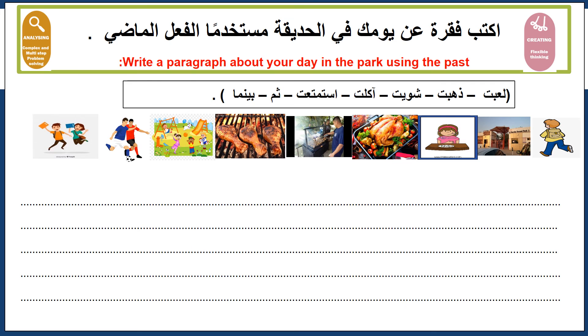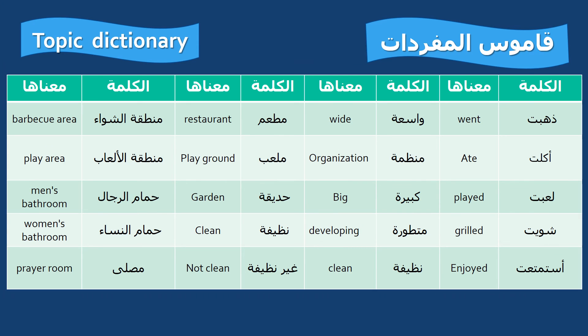والآن جاء دور القاموس - قاموس المفردات. Our topic dictionary for today: ذهبت، أكلت، لعبت، شويت، استمتعت، واسعة، منظمة، كبيرة، متطورة، نظيفة، مطعم، ملعب، حديقة نظيفة، غير نظيفة، منطقة الشواء، منطقة الألعاب، حمام الرجال، حمام النساء، مصنع.